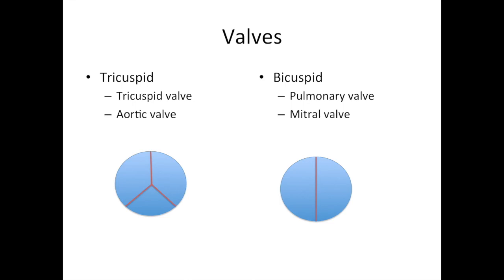The tricuspid valves are the aptly named tricuspid valve itself and the aortic valve. The bicuspid valves are the pulmonary valve and the mitral valve.